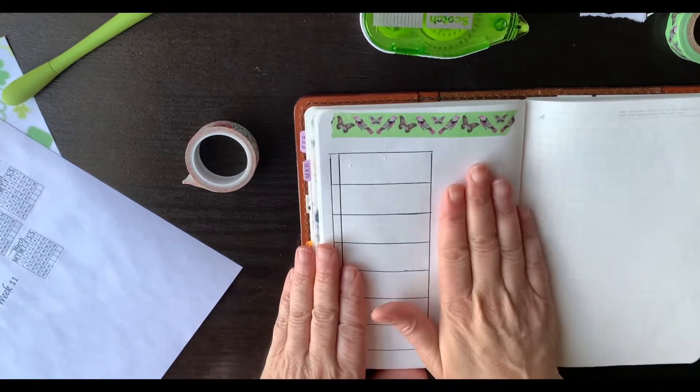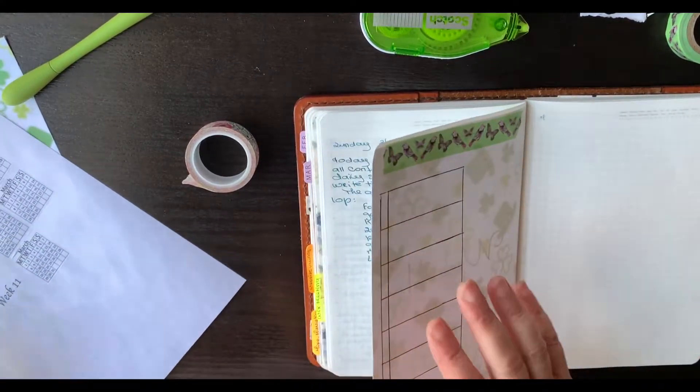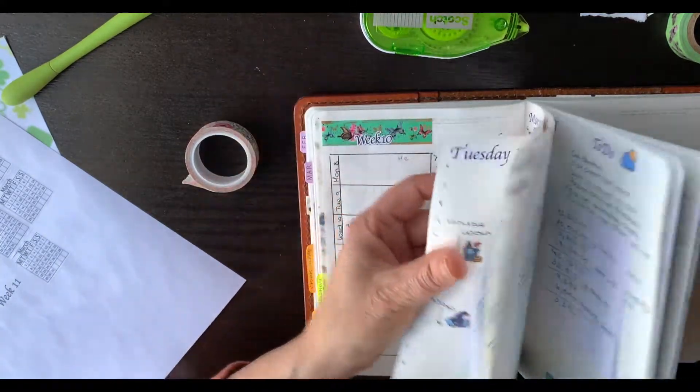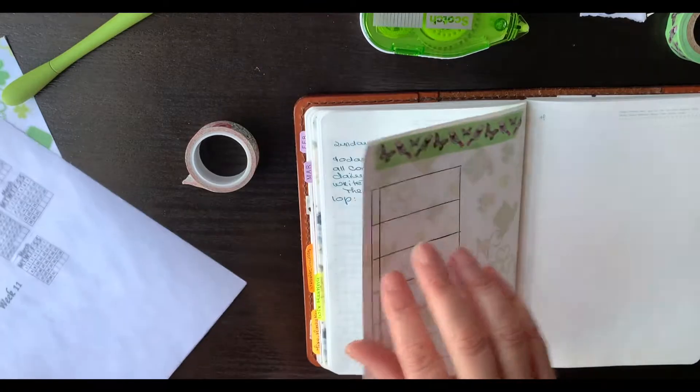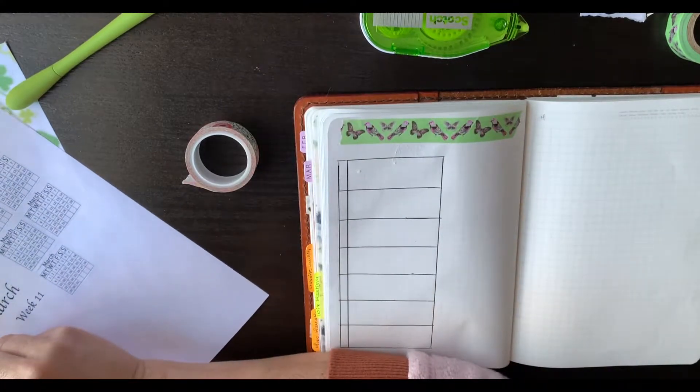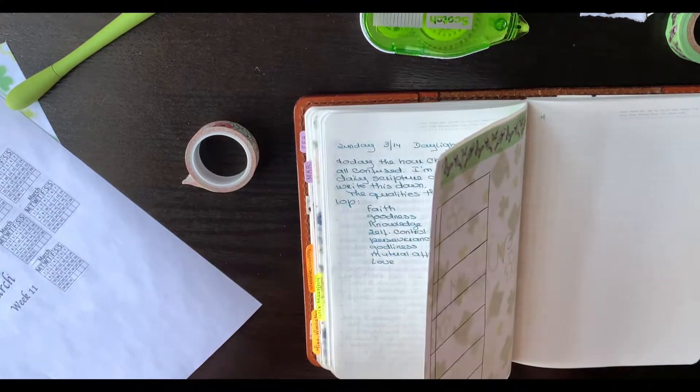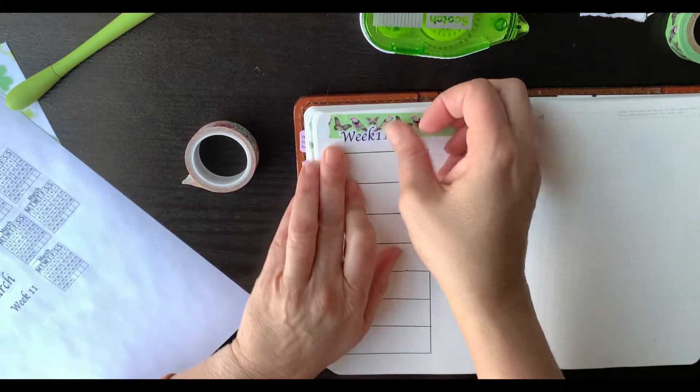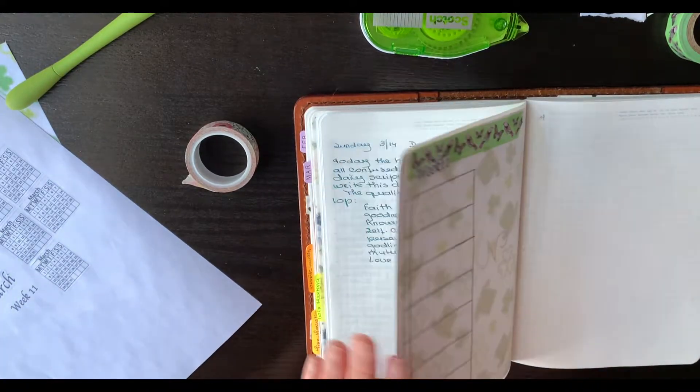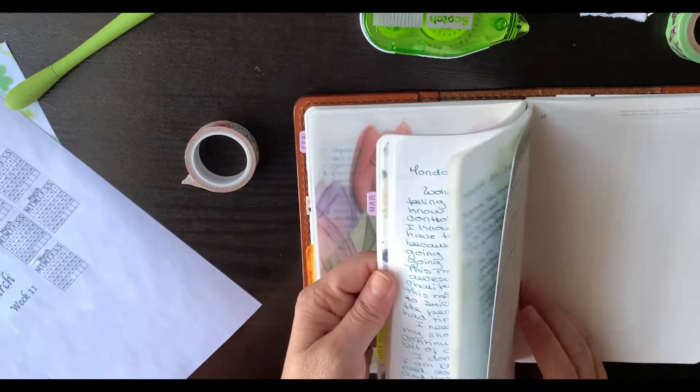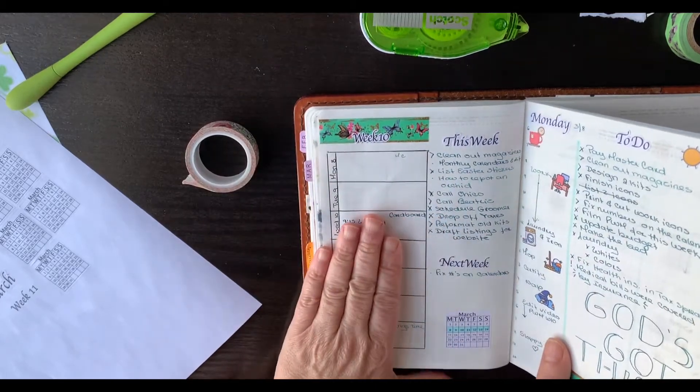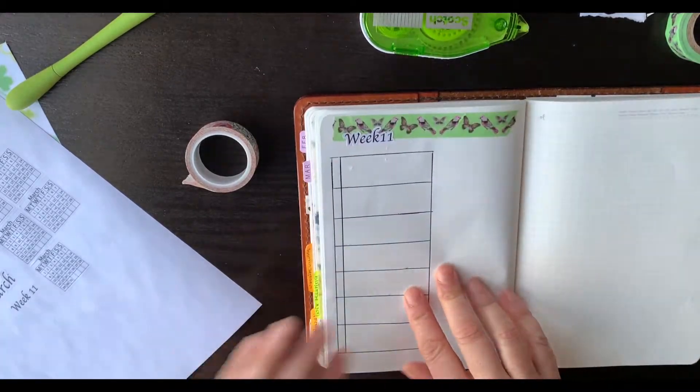So this is going to be, how did I do it? Did I say this week? Week 10. So this is week 11, week 11. And then I'm just going to go back to what I did last week, this week and next week.